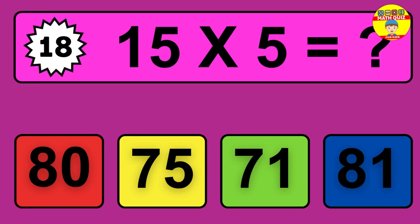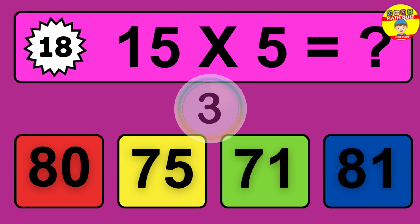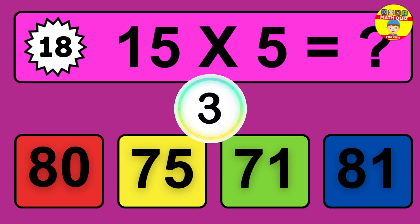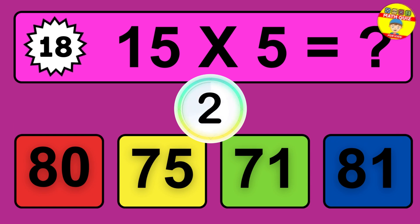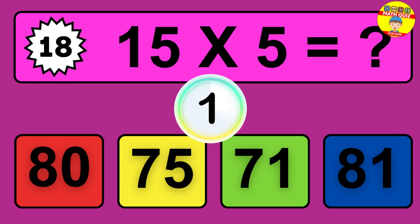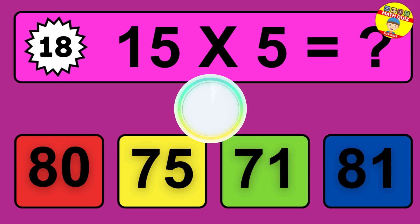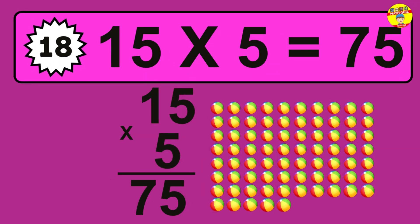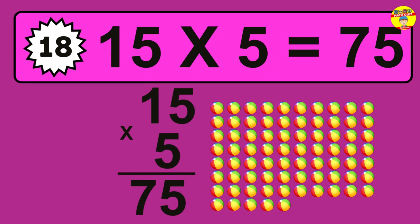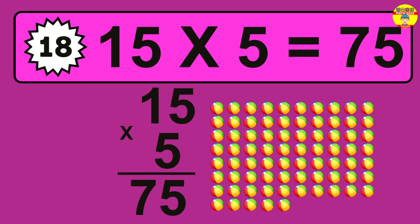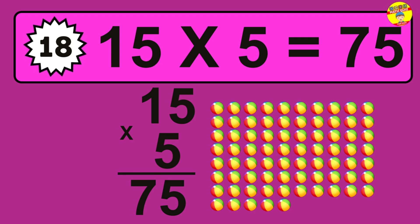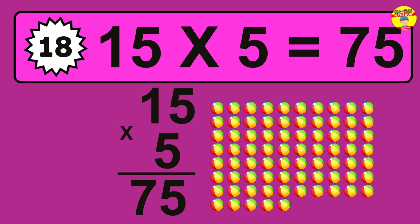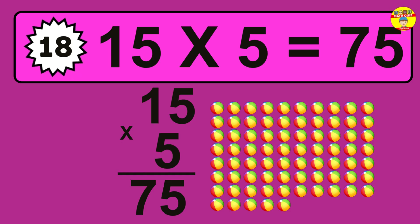Question eighteen: 15 times 5 equals what? The answer is 15 times 5 is 75. To calculate, we have 15 groups with 5 balls each. So how many balls do we have? 75 balls.